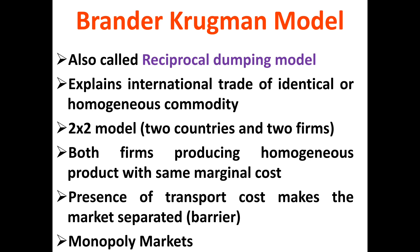It explains the international trade of an identical or homogeneous commodity in a two-by-two model. That is, assume there is the presence of two countries and two firms — a home country and a foreign country, one firm in the home country and one firm in the foreign country. That means the initial market structure is monopolistic. There is the presence of transportation costs that separate these two markets, and the market structure is initially assumed as a monopoly market.